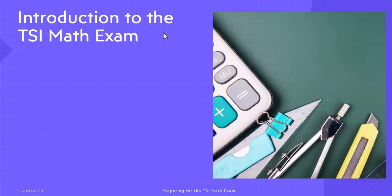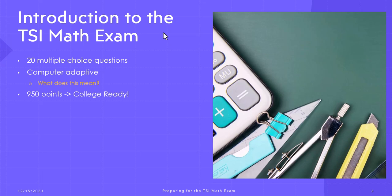The TSI begins with 20 multiple-choice questions to assess if you are college ready. If you miss questions, the program gives you easier problems. If you answer questions correctly, the program gives you more difficult problems.